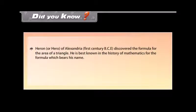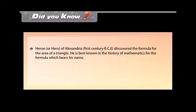Did you know? Heron or Hero of Alexandria, 1st century BCE, discovered the formula for the area of a triangle. He is best known in the history of mathematics for the formula which bears his name.